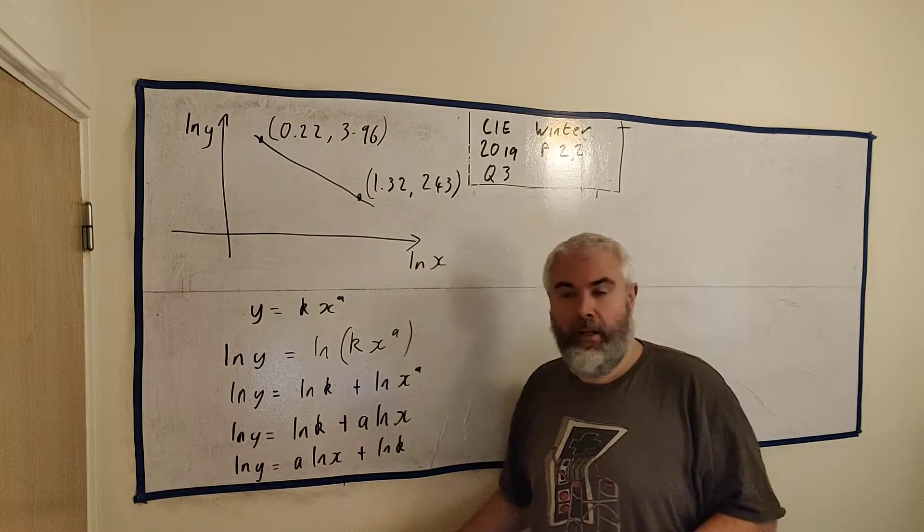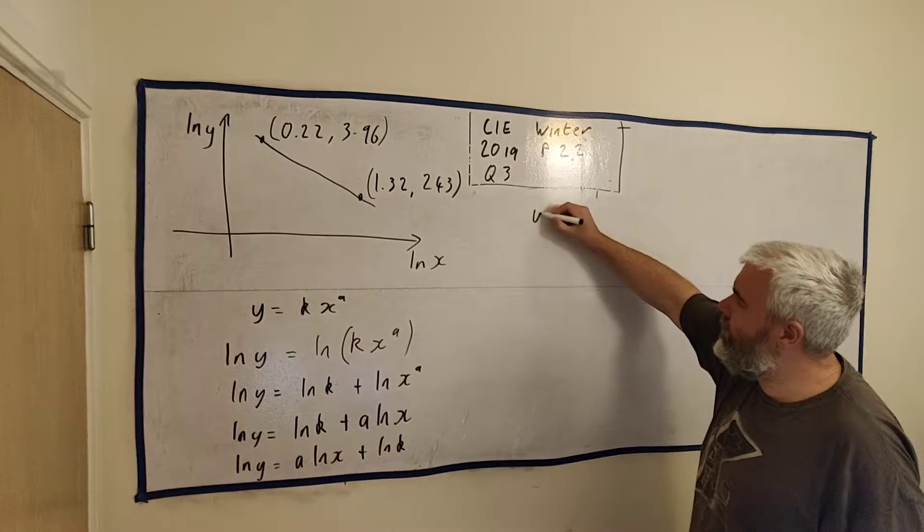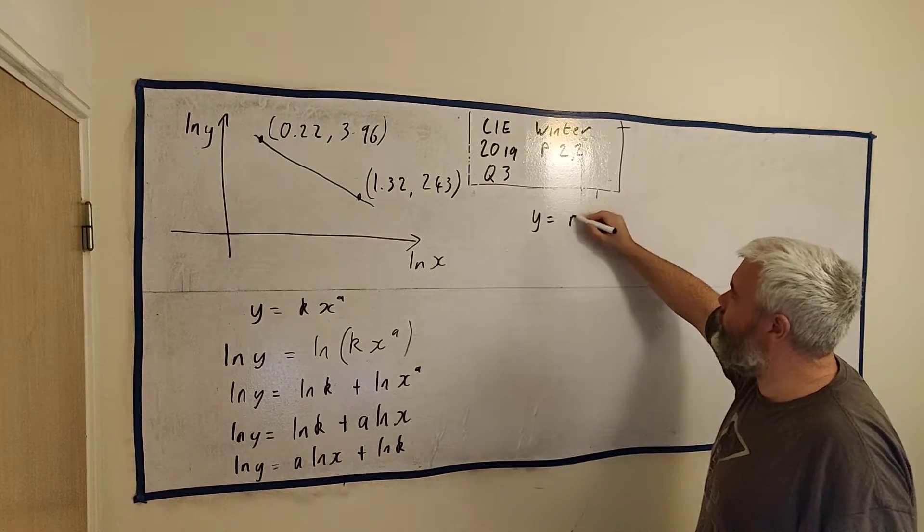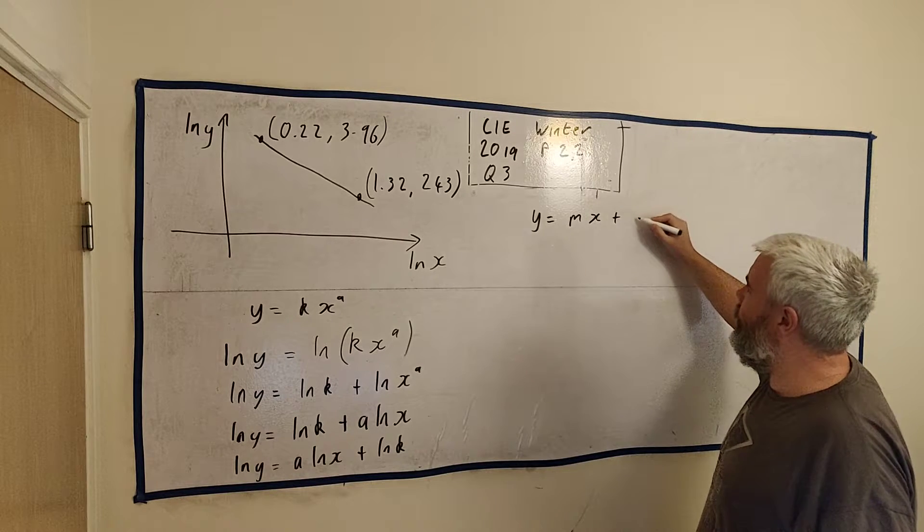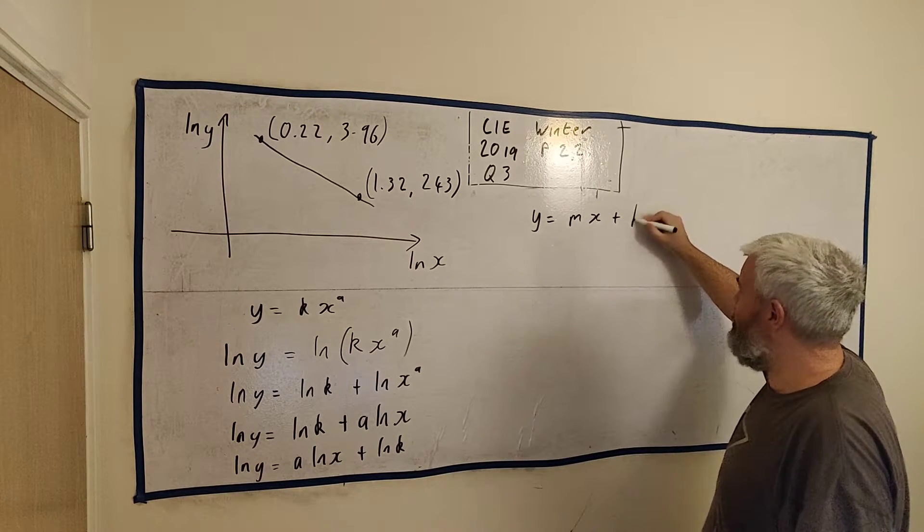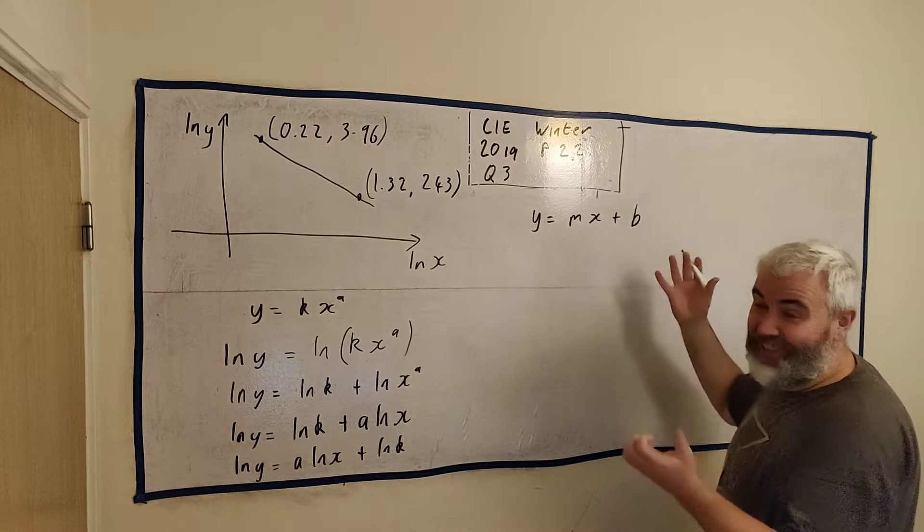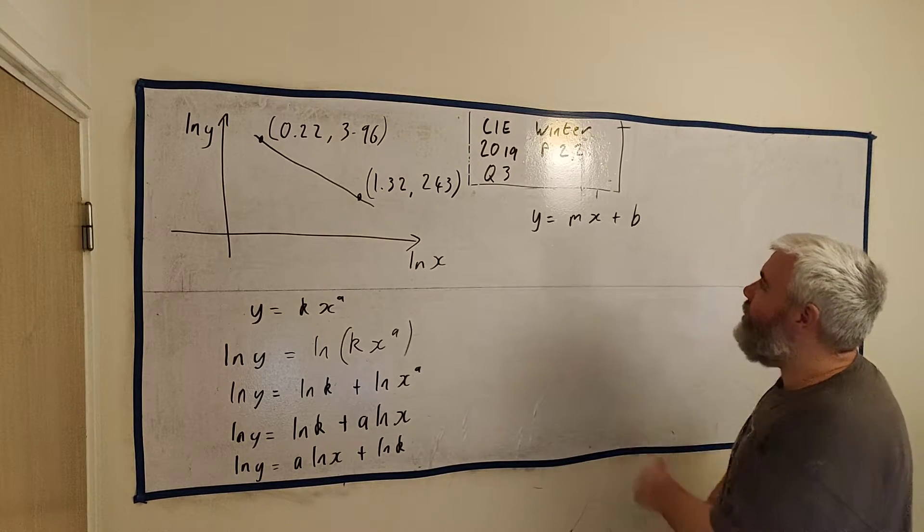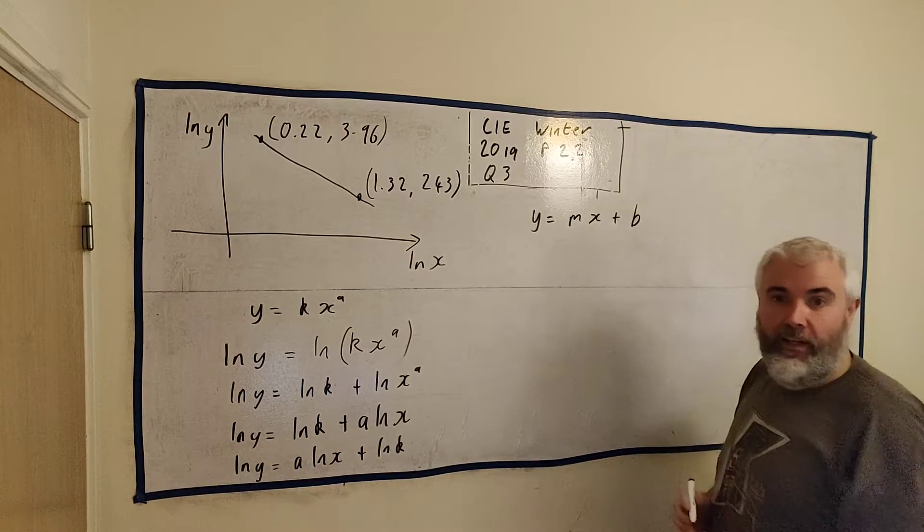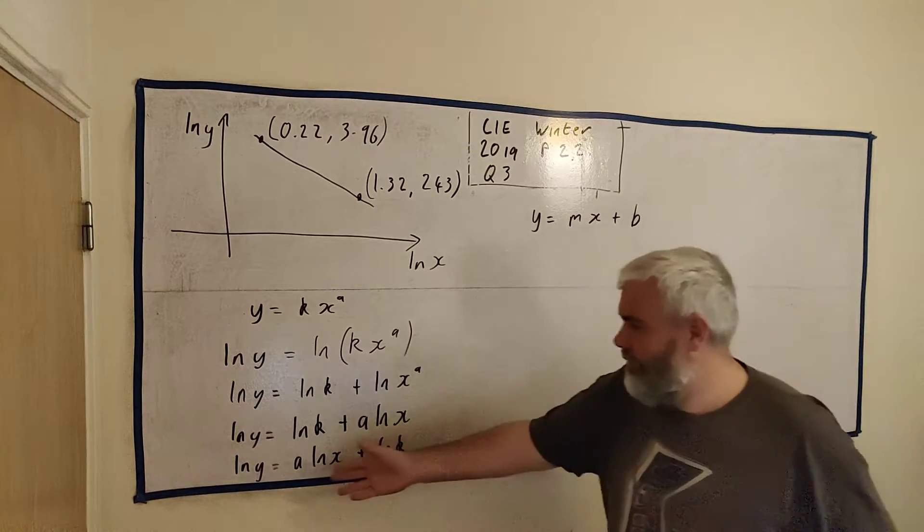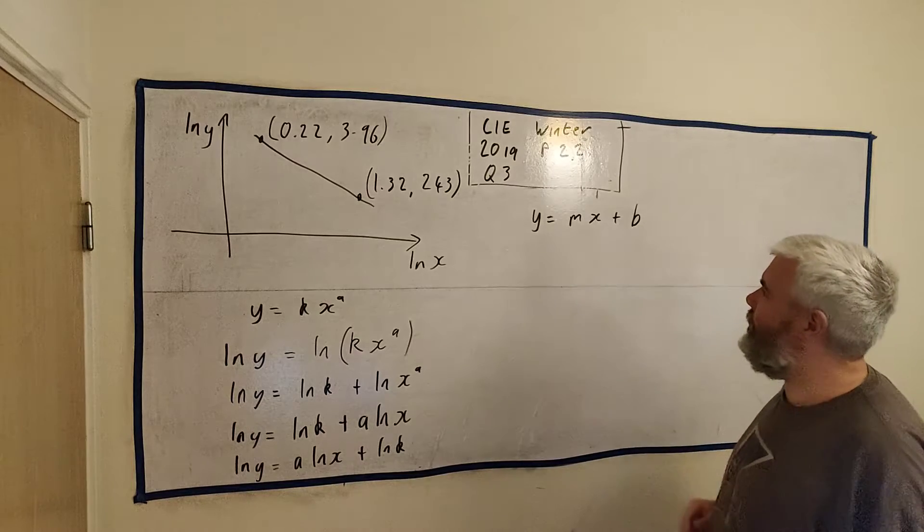Now we might be very used to seeing lines like this. y is equal to mx plus b maybe. And so this is what we're used to a line looking like, but this doesn't look like it. y has a natural log and different things.